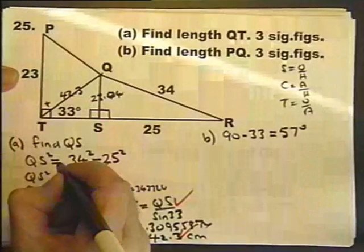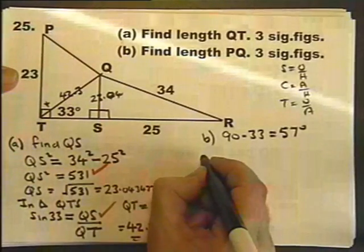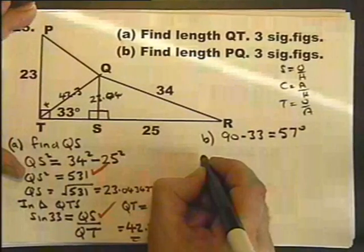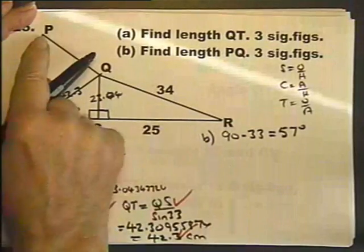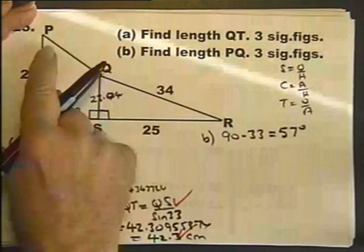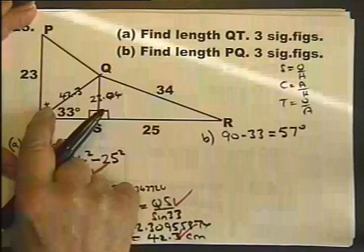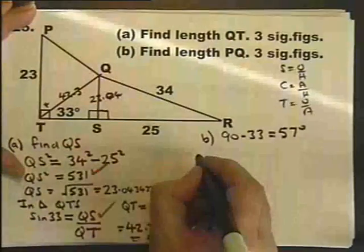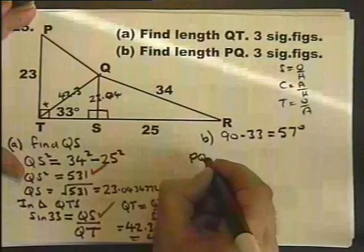Now how do you do the cosine rule? Well, this is how I do it. If I want to find that side, I need to have two sides and the included angle, which I've now got. So PQ